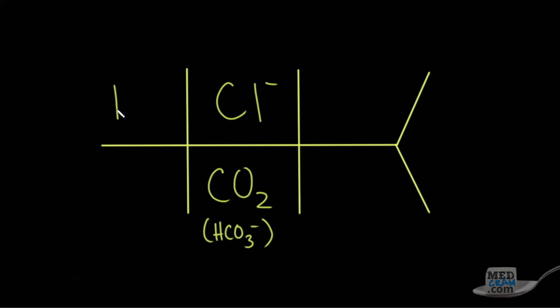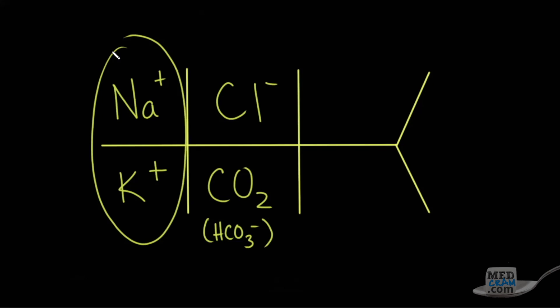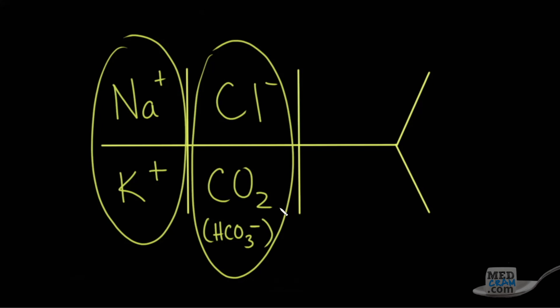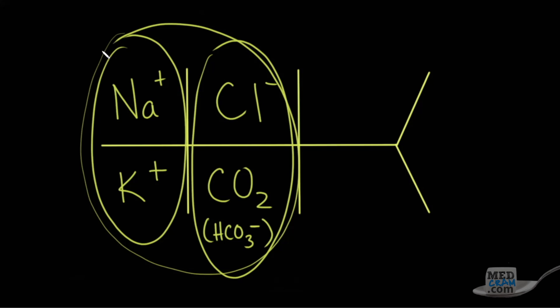The sodium is here, as we've talked about extensively, and the potassium is here. We've got the positive charges on this side and the negative charges on this side. What we're going to look at is these positive versus negative charges, because we'll start to see that they don't add up completely — there are more positive charges in the CHEM7 than negative charges, because some negative charges in the body are not accounted for in this construct called the CHEM7.